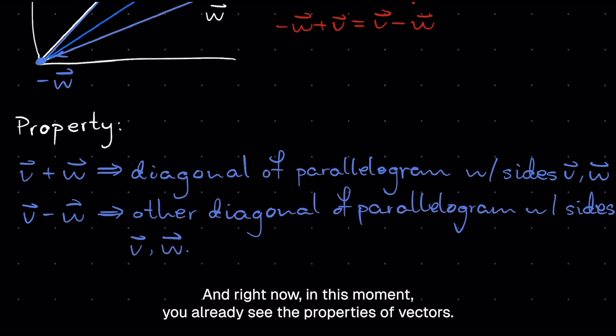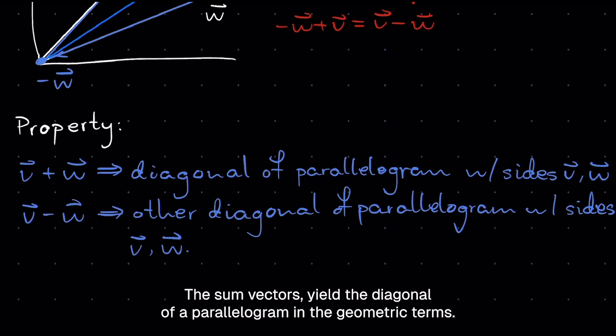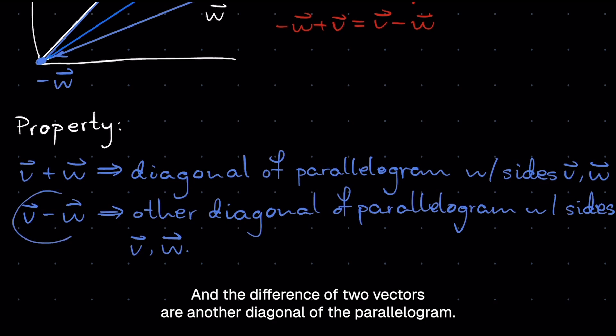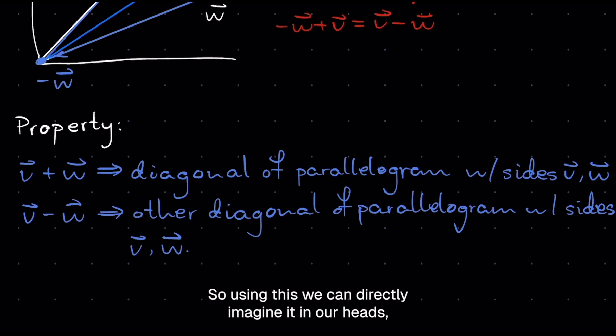And right now, in this moment, you already see the properties of vectors. In fact, we can already see how the linear combinations yield very specific properties in vectors. The sum of vectors yields the diagonal of a parallelogram in geometric terms, and the difference of two vectors is another diagonal of the parallelogram. So using this, we can directly imagine it in our heads, which is much more useful than trying to imagine numbers in our heads.